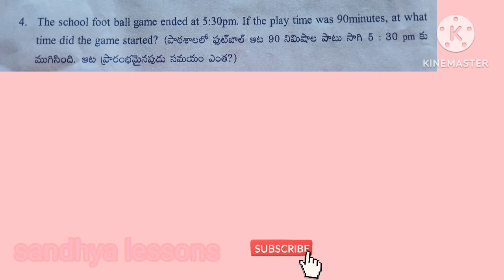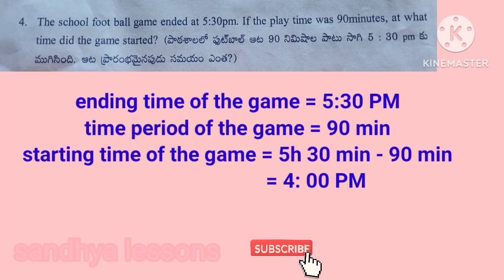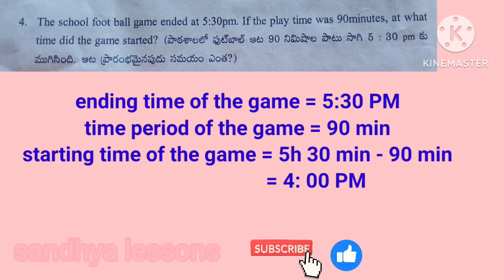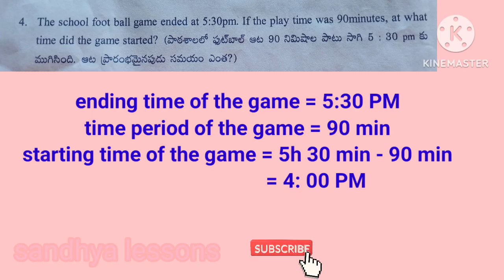Fourth problem: the school football game ended at 5:30 PM. If the play time was 90 minutes, at what time did the game start? Solution: ending time equals 5:30 PM, duration equals 90 minutes. Starting time equals 5 hours 30 minutes minus 90 minutes, which equals 4 PM. Therefore, the game started at 4 PM.